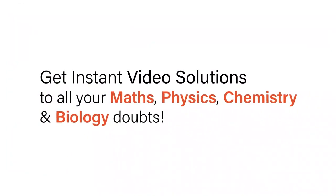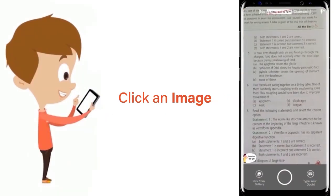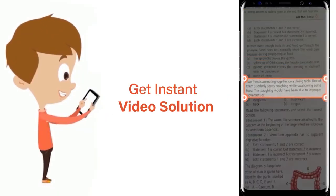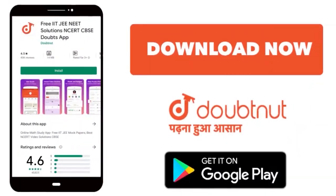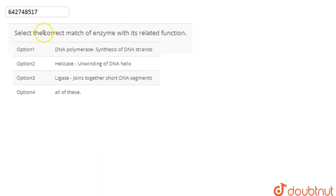With Doubtnet, get instant video solutions to all your maths, physics, chemistry, and biology doubts. Just click the image of the question, crop it, and get an instant video solution. Download the Doubtnet app today. In this question, we are asked to select the correct match of enzymes with their related functions.